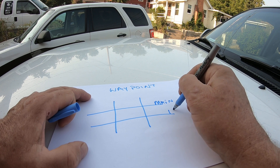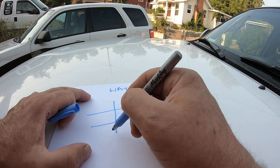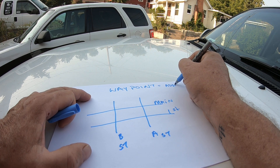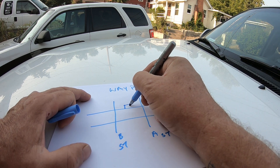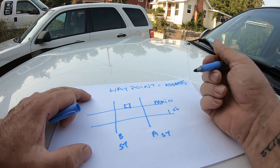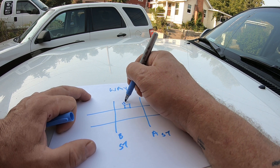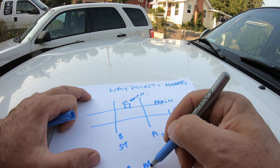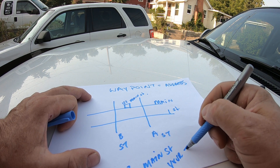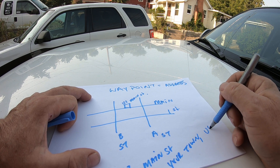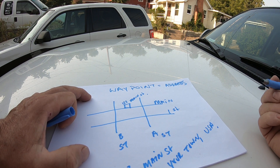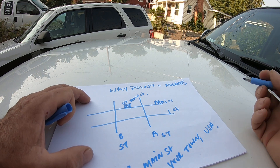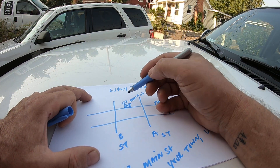So let's say this is Main Street. Basically, a waypoint equals an address. If we want to know what this business right here is, the city in all its wisdom has come up with an address of 123 Main Street, your town, USA. There is no other place in the world that will have this address — 123 Main Street, your town, USA.